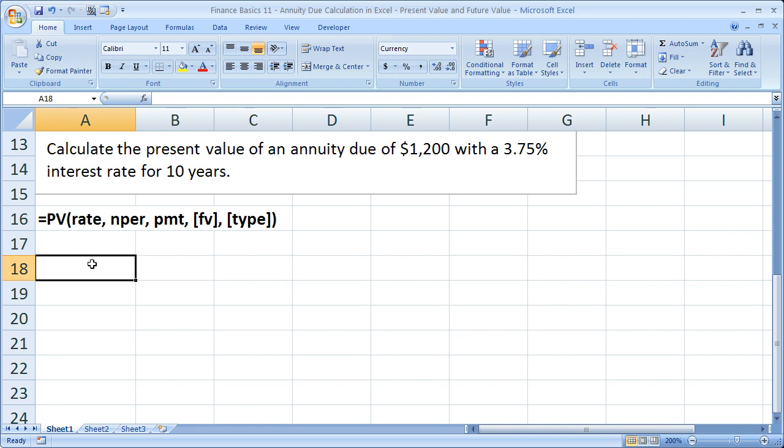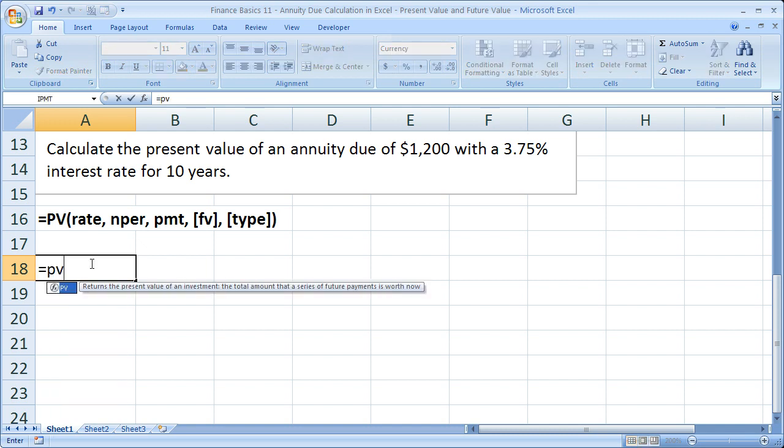So let's go ahead and get the present value for this. Equals PV open parentheses. What is our rate? Well, quite simply 3.75%. Make sure to put that in as a decimal—.0375 comma.